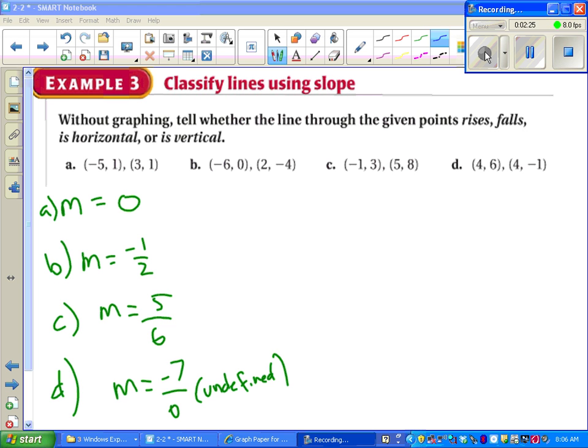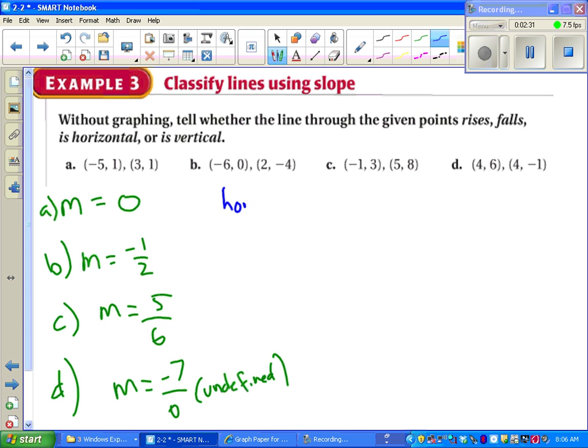After going through and finding all your slopes, which I recommend you try on your own, you can then look at the numbers. Since I see a zero, that means I must have a horizontal line. A negative slope means we fall. A positive slope means we rise. When we have an undefined slope, that means we stay vertical.